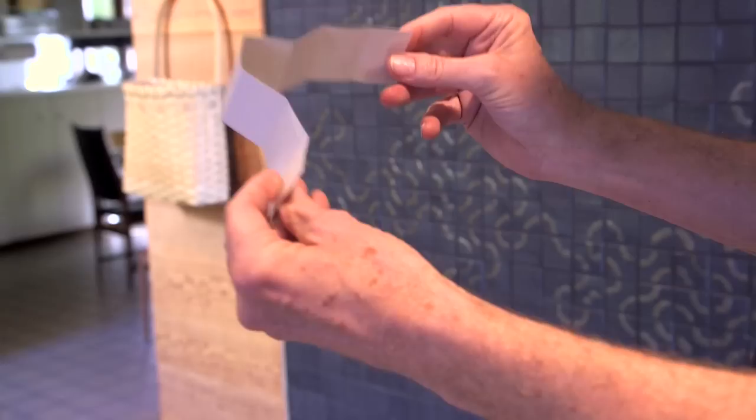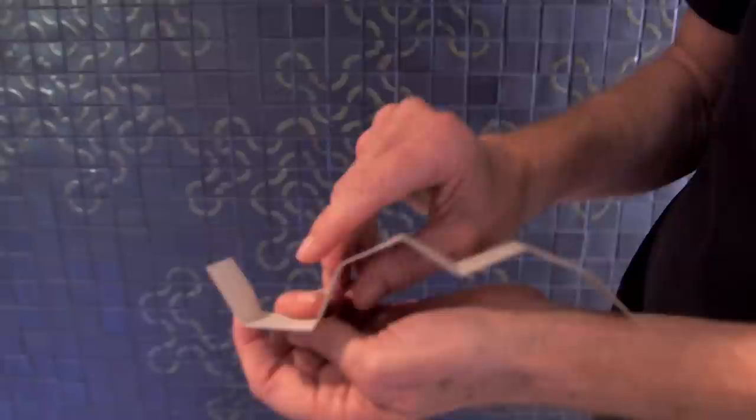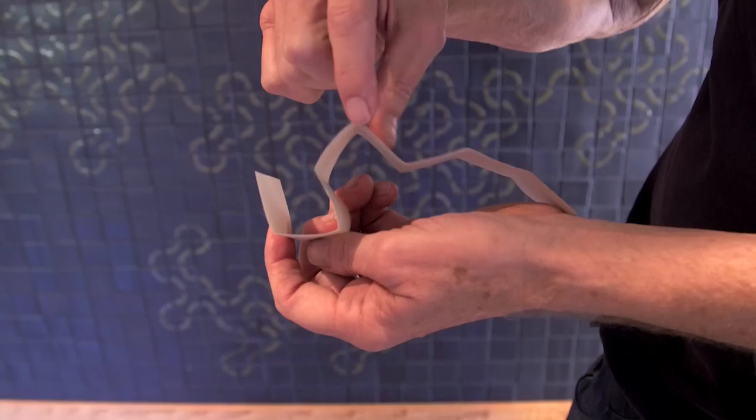But when you look at it, you see that some of the folds go mountain folds and some are valley folds. If you imagine walking here, you're turning left here, you're turning left here, but then you're turning right. Another right turn and left turn and so on. So there's a pattern of lefts and rights.